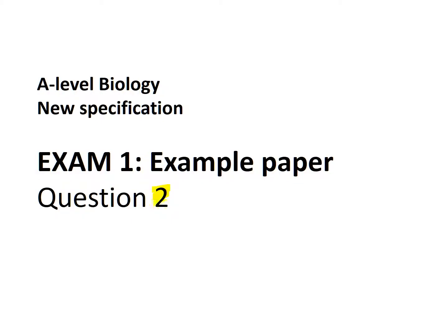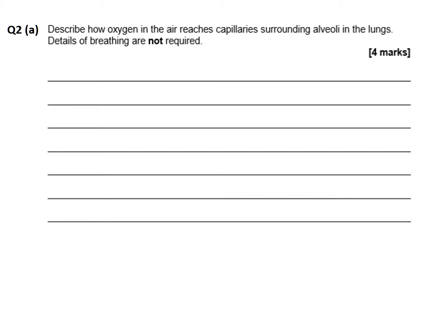In this video we're going to talk about exam question two from the specimen paper from exam one. That's for the new spec on the AQA exam board. The first question is fairly straightforward — it's really a recall question, AO1, and it asks us to describe how oxygen in the air reaches the blood capillaries that surround the alveoli in the lungs.